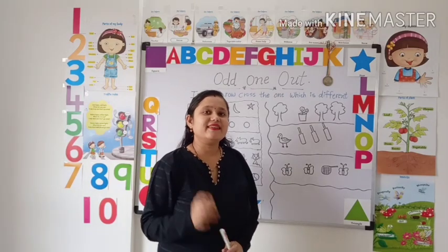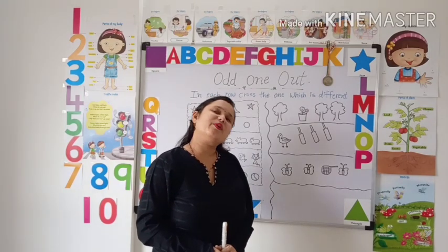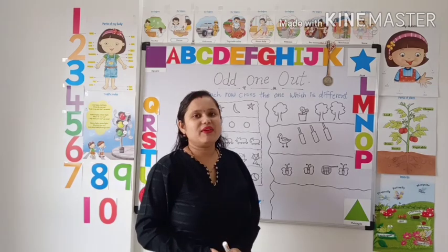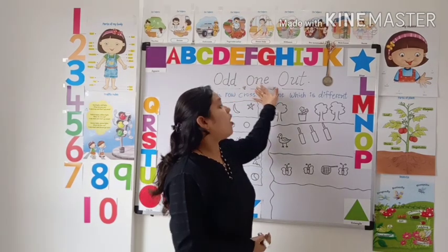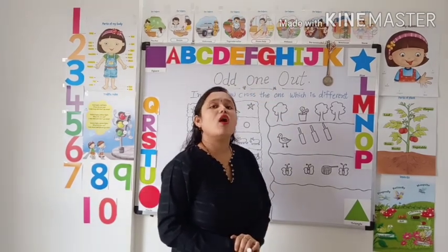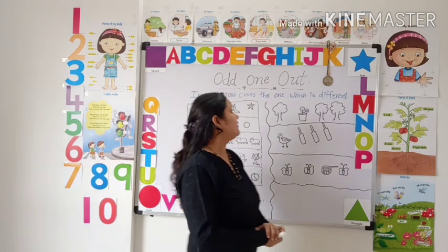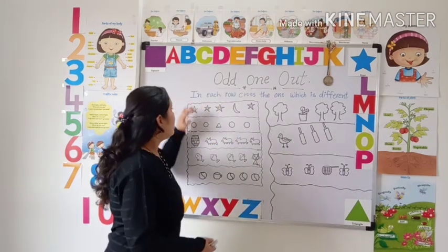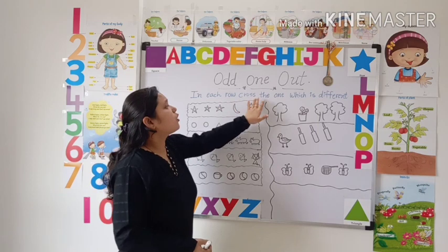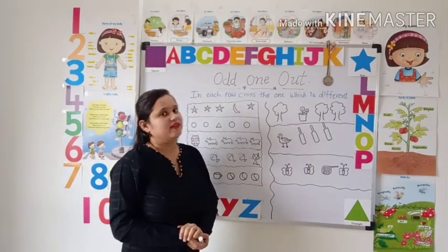Hello children, how are you today? I hope you all are fine. Today we are going to learn about odd one out. Let's start. In each row, cross the one which is different.